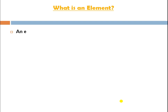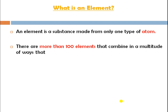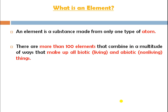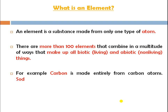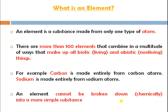An element is a substance made from only one type of atom. There are more than a hundred elements that combine in a multitude of ways to make up all biotic and abiotic things. For example, carbon is made up entirely of carbon atoms, and sodium is made up entirely of sodium atoms. Elements cannot be broken down chemically into simpler substances.